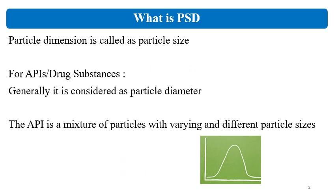Let's start with the ESD. Generally in the pharmaceutical field, considering the API or excipient, the particle dimension is called the particle size, and generally the particle size is the particle diameter. Different shapes exist for APIs and excipients. The APIs and excipients are irregular in shape, but still the tentative diameter can be calculated. There are various techniques for measuring the particle size, and based on that diameter, the PSD distribution is given.